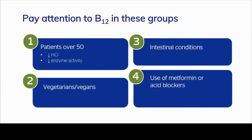You really want to pay attention to vitamin B12 status in four patient groups. First, older people — never assume that consuming enough B12 means they're absorbing it, because stomach acid production and enzyme secretion decline with age. Second, vegetarians and vegans, whose dietary intake is very low since animal products are the only natural source. The only alternative is fermented products, since bacteria make B12, but in very low quantities.